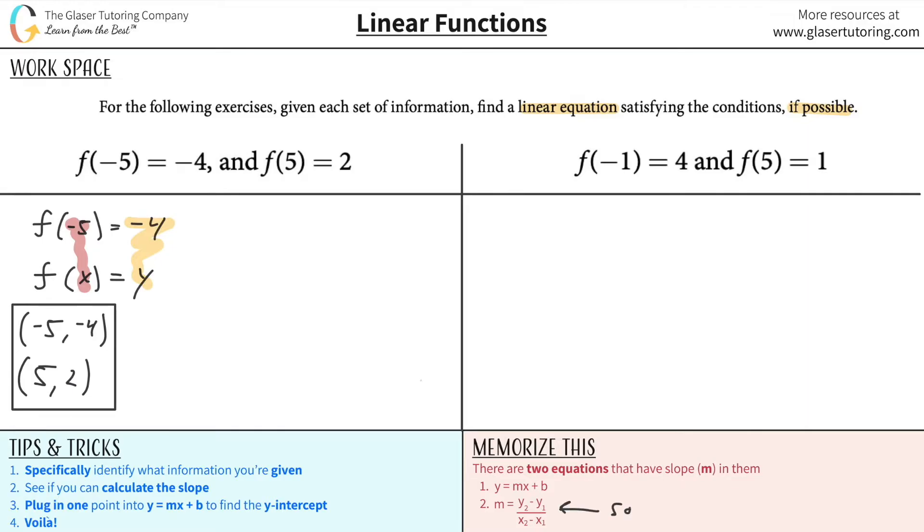Remember, the slope formula is y2 minus y1 over x2 minus x1. So we simply, we have two coordinates. I'll call this my first coordinate, this is my second coordinate. And if I do that, this would be my x1, and this would be my y1. And then that means this would be my x2, and this would be my y2.